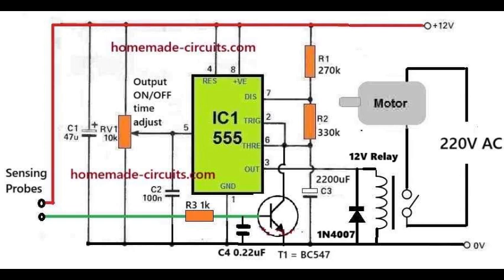When water supply stops and becomes unavailable, the water across the probes is removed. This causes the T1 BC547 to turn off, restoring the IC555 back to its astable mode. The IC output now keeps the relay and motor operational for another 15 seconds, and then turns it off.